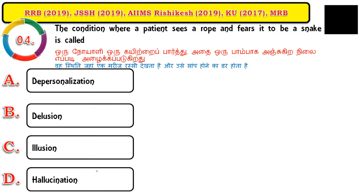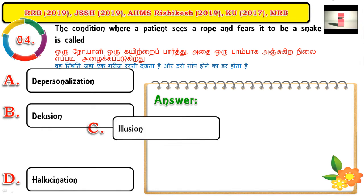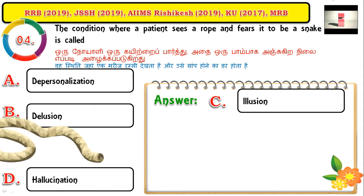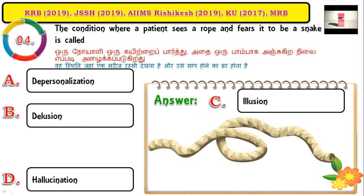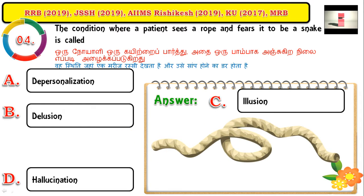Question number four: the condition where the patient sees a rope and fears it to be a snake is called illusion, because the person is seeing the rope which is truly present on the floor but misperceives it as a snake.